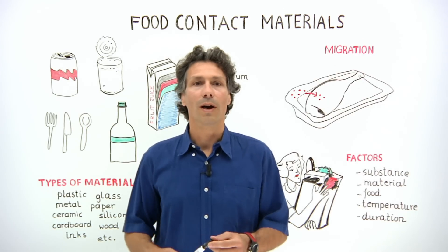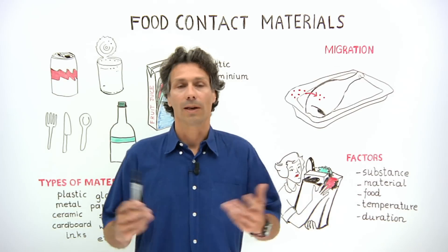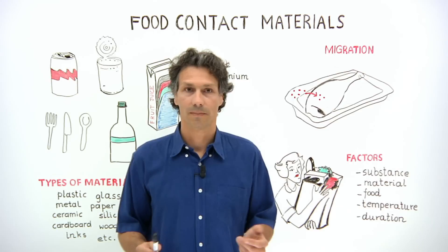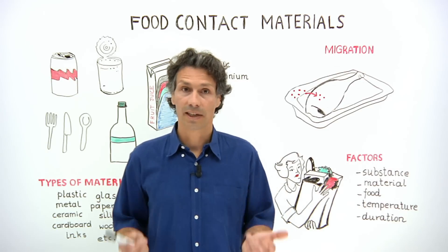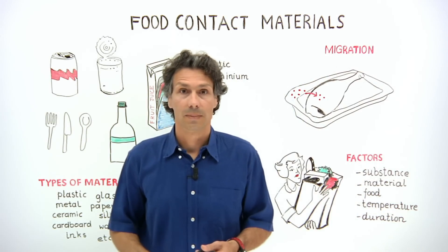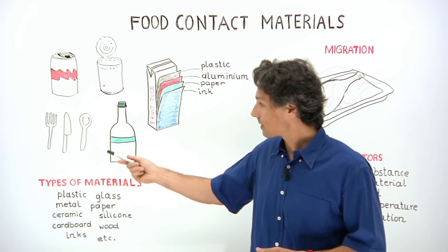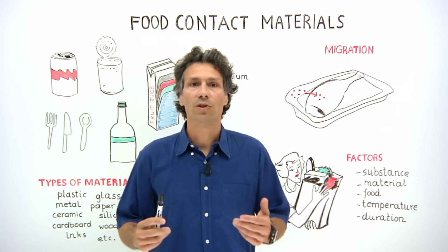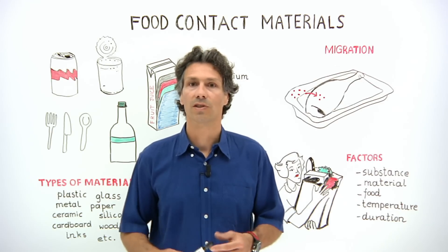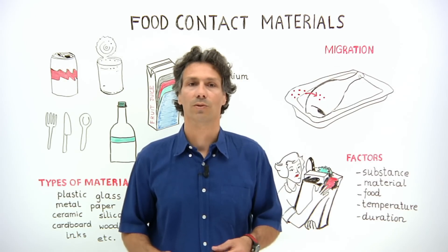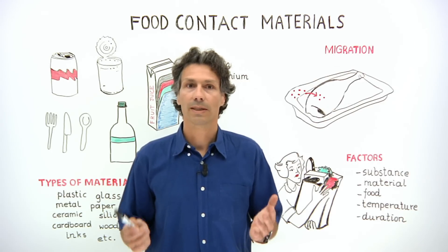First of all, what do we mean by food contact materials? Food contact materials are all types of materials that come into contact with food. This means food packaging and food containers such as bottles, cans and cartons. Cutlery and dishes like knives, forks, cups and plates are food contact materials too. It also includes materials used in kitchen equipment such as coffee makers, kettles and blenders. Other types are production machinery and containers used in food transport.